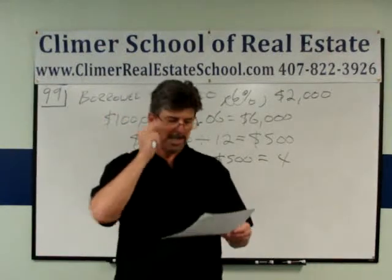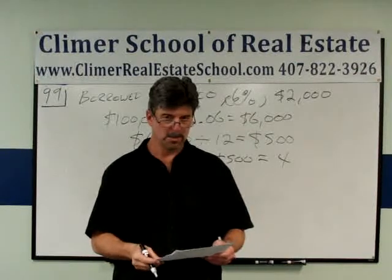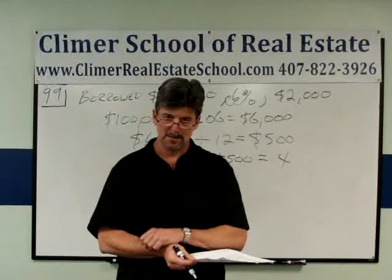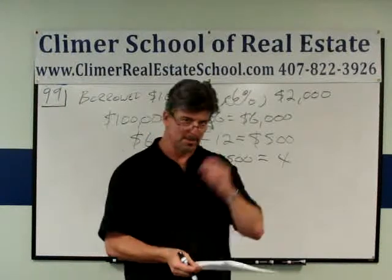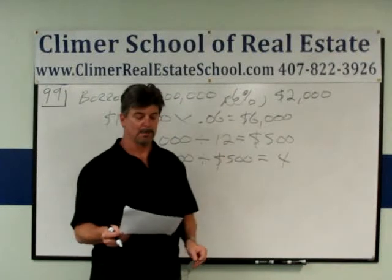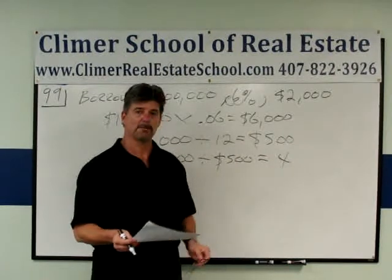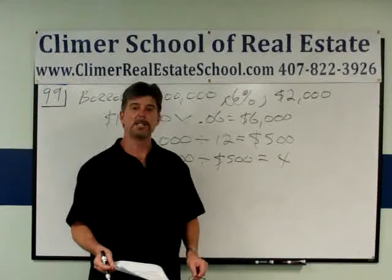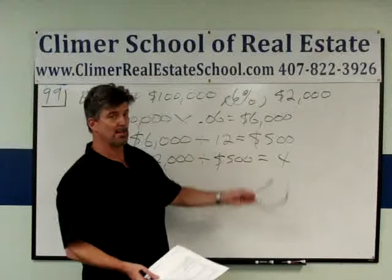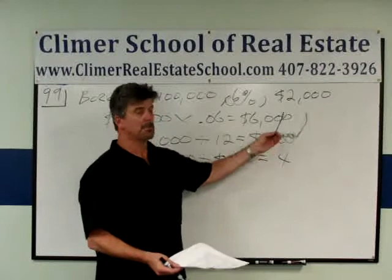But I want to show you something else. If you take a look at these other answers, you can just eliminate them. 2½ years — if you do that in the calculator, how much is that? 30 months. What's 30 times 500? That's a little more than $2,000. 3 months? 3 months times 500 is $1,500 — that's not the right answer. 1 year? 12 months? We already know that's $6,000. The only one left is 4. 4 times 500 is $2,000.